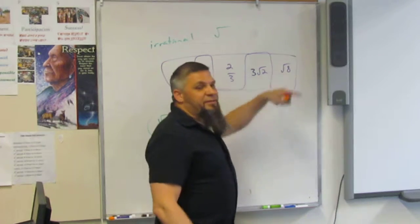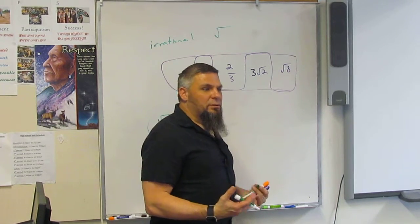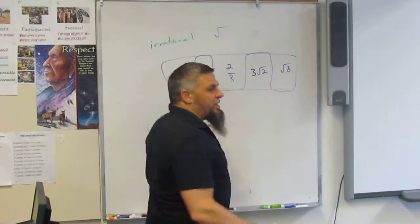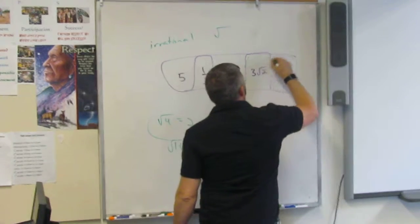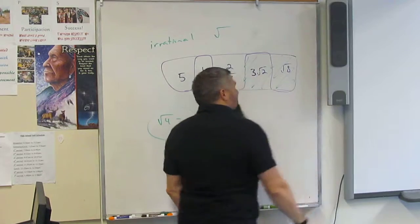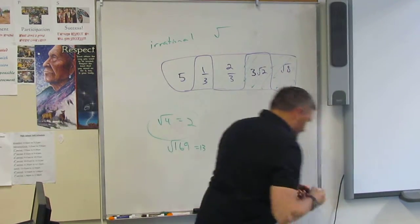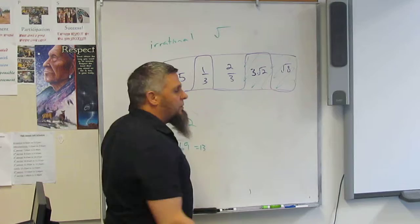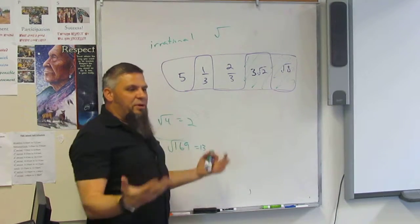But the square root of eight is irrational. The square root of two is irrational. So these are your shaded ones. You're going to shade those on the test because those are the ones that are irrational. A fraction is perfectly rational.